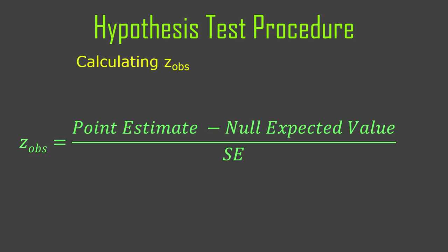So we calculate z observed — the z value for our mean — and it's always this format: your point estimate, which is your sample mean, minus the null expected value of the point estimate, which is mu zero, over the standard error of the distribution of all possible means according to the null hypothesis — the standard error of the mean. So it's just the mean minus mu zero over the standard error. Very easy calculation — you have to do a square root in there, but you can just push that button on your calculator.